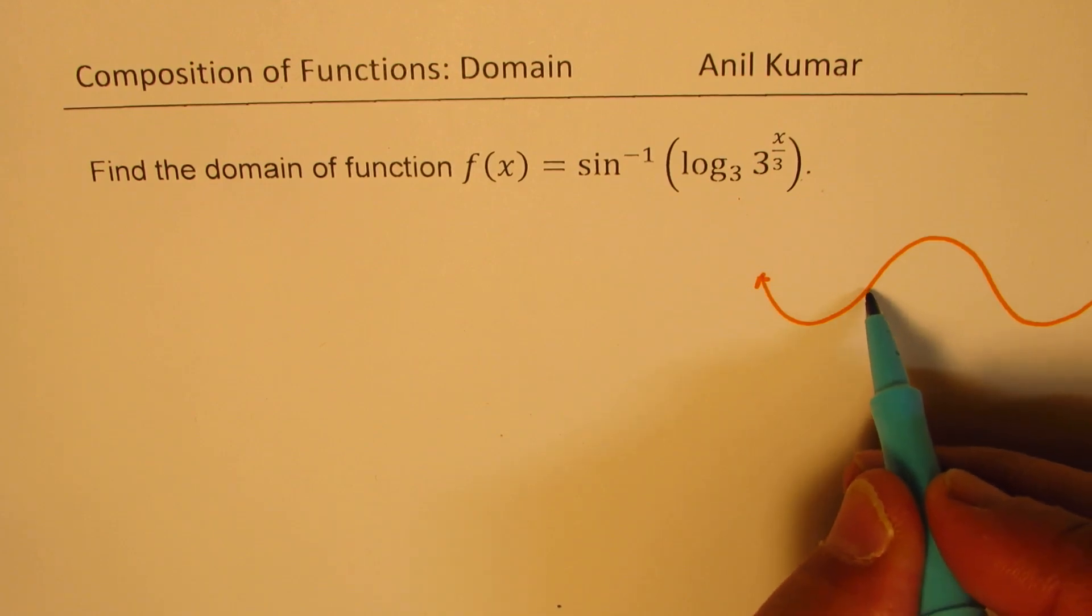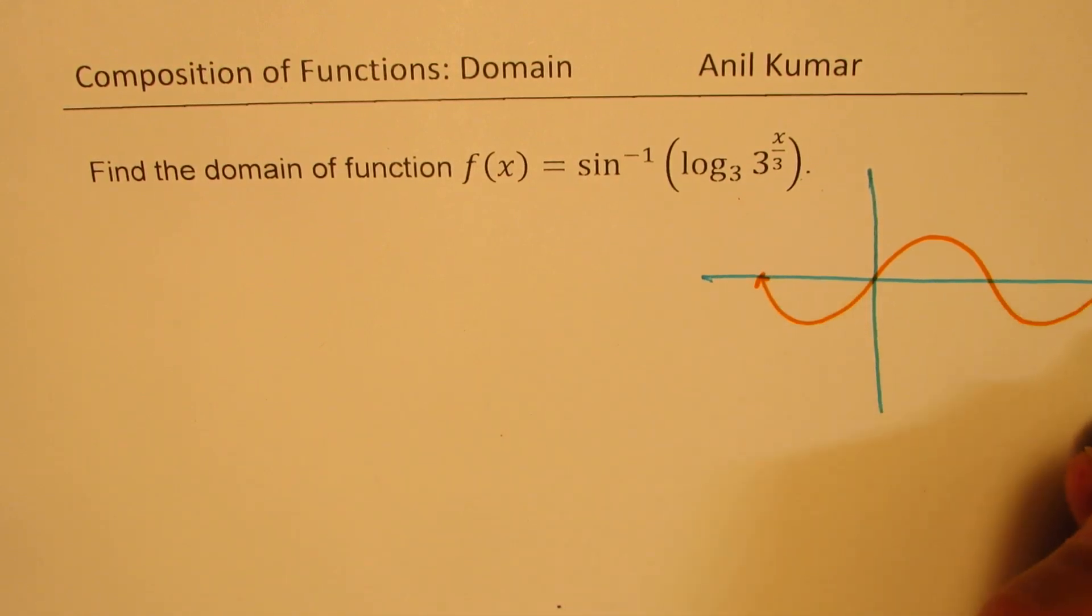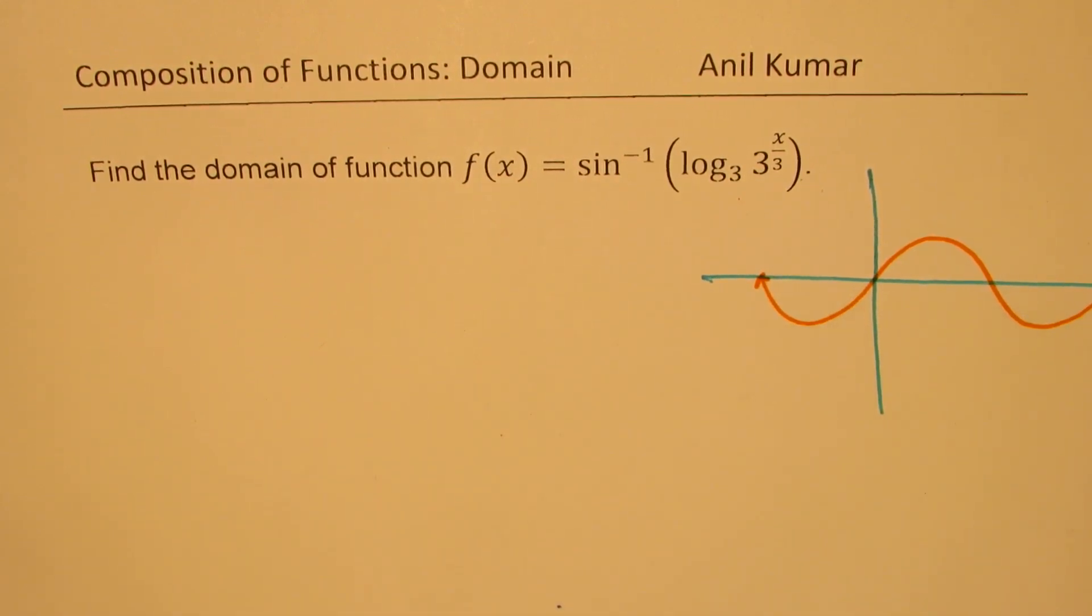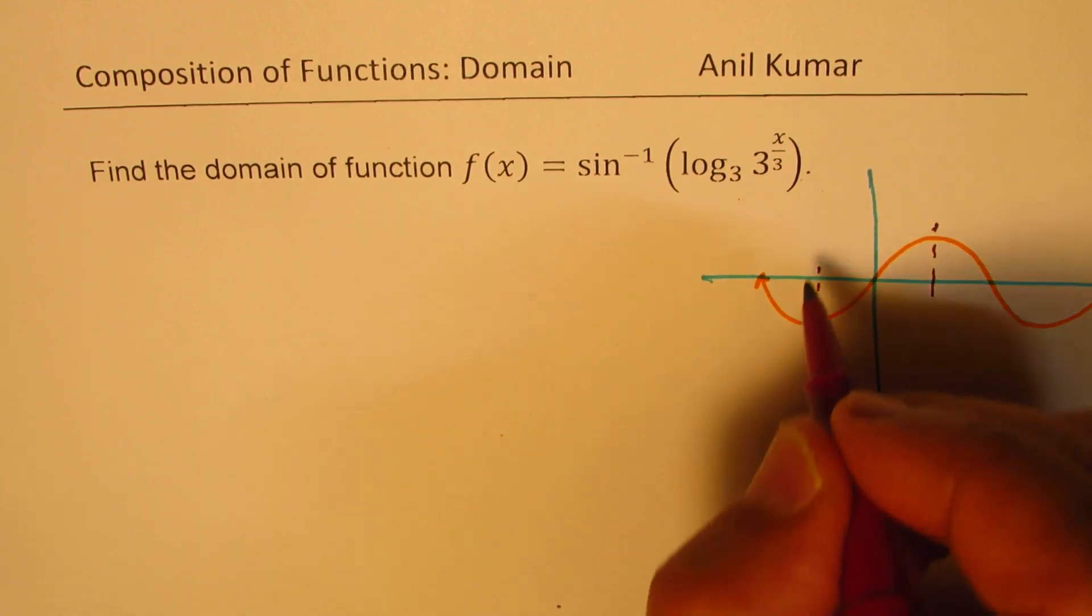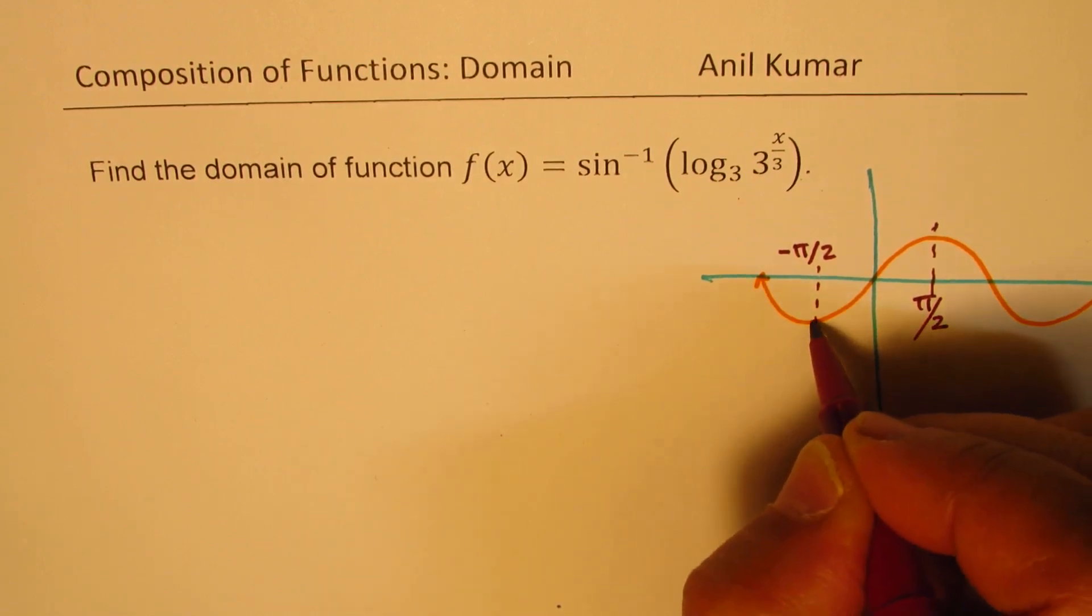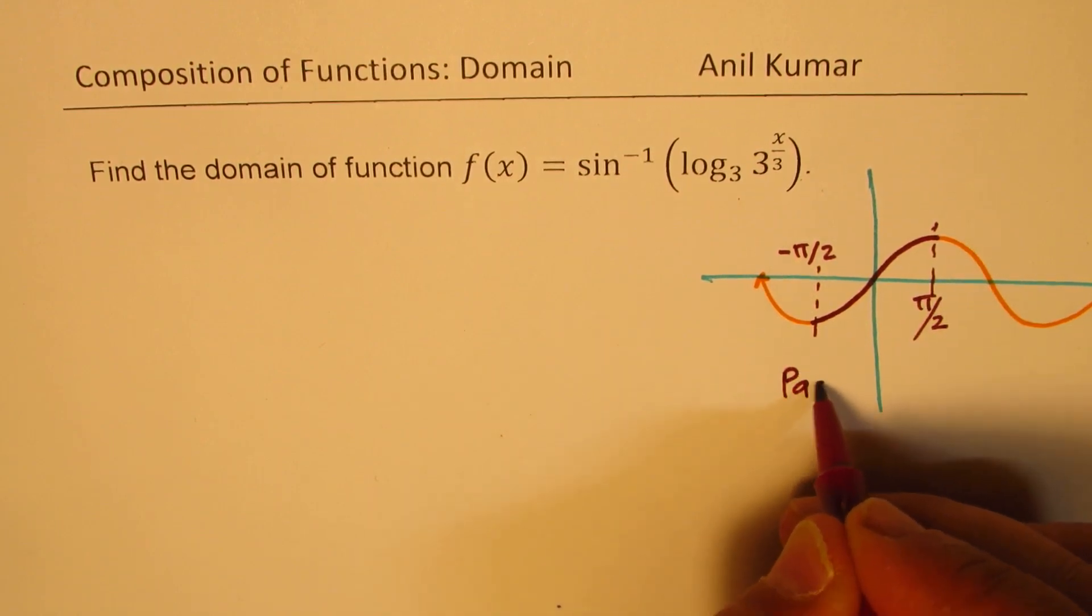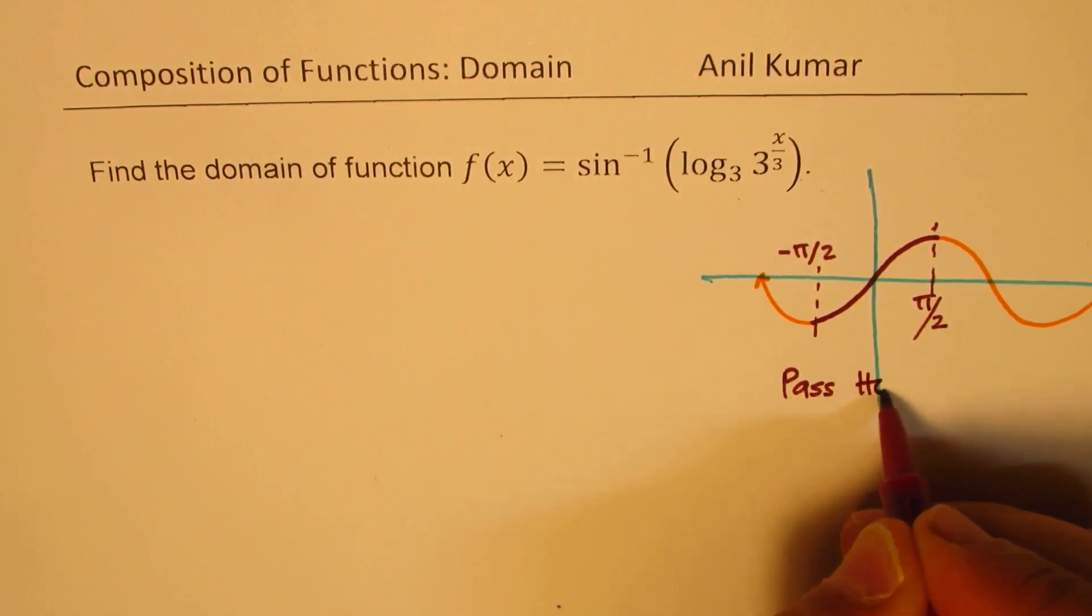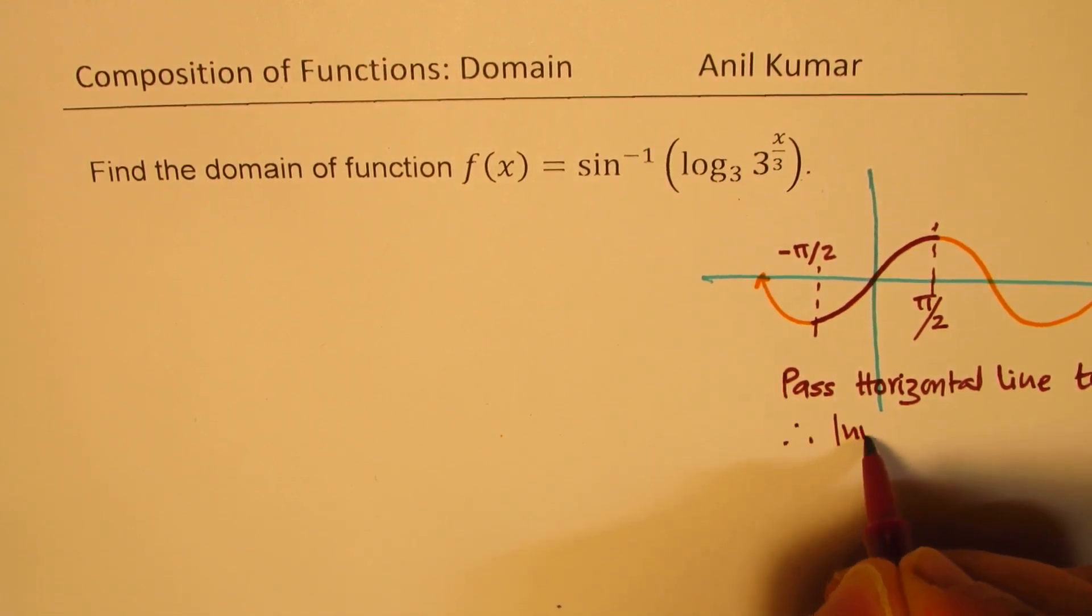It is zero at zero so I'll form the axis here. When we talk about inverse being a function, in that case for sine we use the values from minus pi by 2 to pi by 2. So this portion of the graph passes horizontal line test. Therefore inverse will be function.